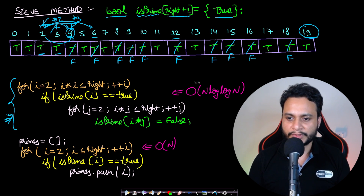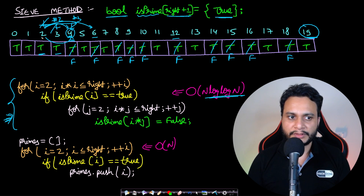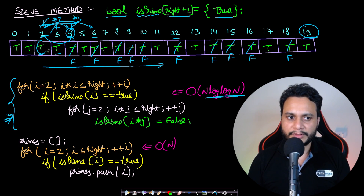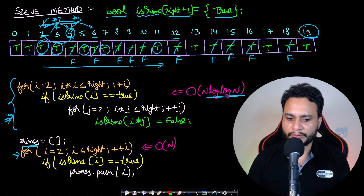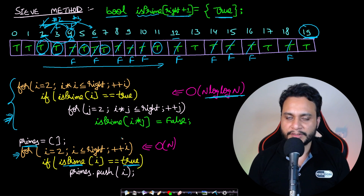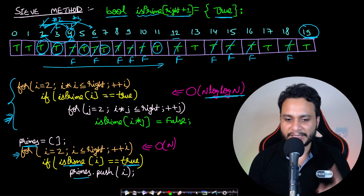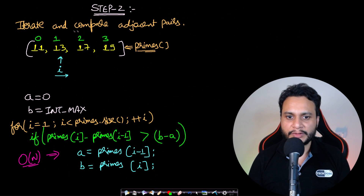The time complexity of the Sieve method is O(N log log N). Once the sieve is built, we iterate from 2 up to the right value — 0 and 1 are non-prime — and for every index marked true, we push it into the primes array. This completes Step 1.